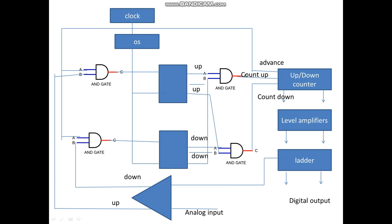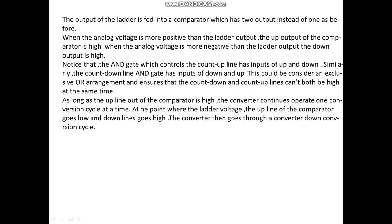This diagram represents the analog to digital conversion. The output of the ladder is fed into the comparator, which has two outputs instead of one. In the converter method there is only one output in the comparator, but in the continuous method there are two outputs: one up and another down. When the analog voltage is greater than the ladder output, the up output of the comparator is high.